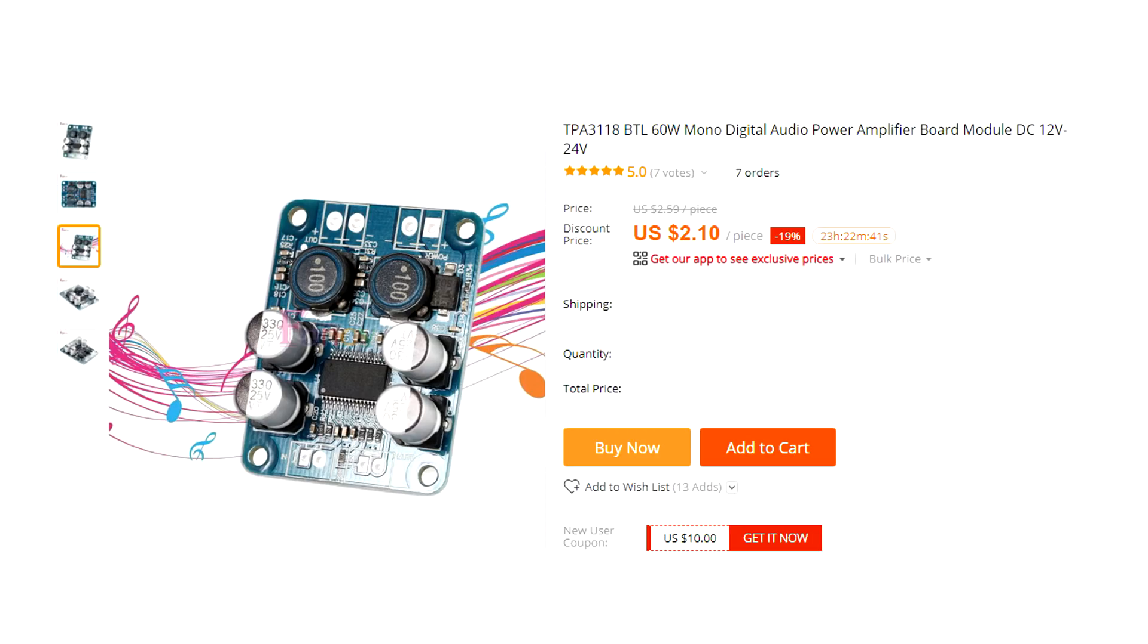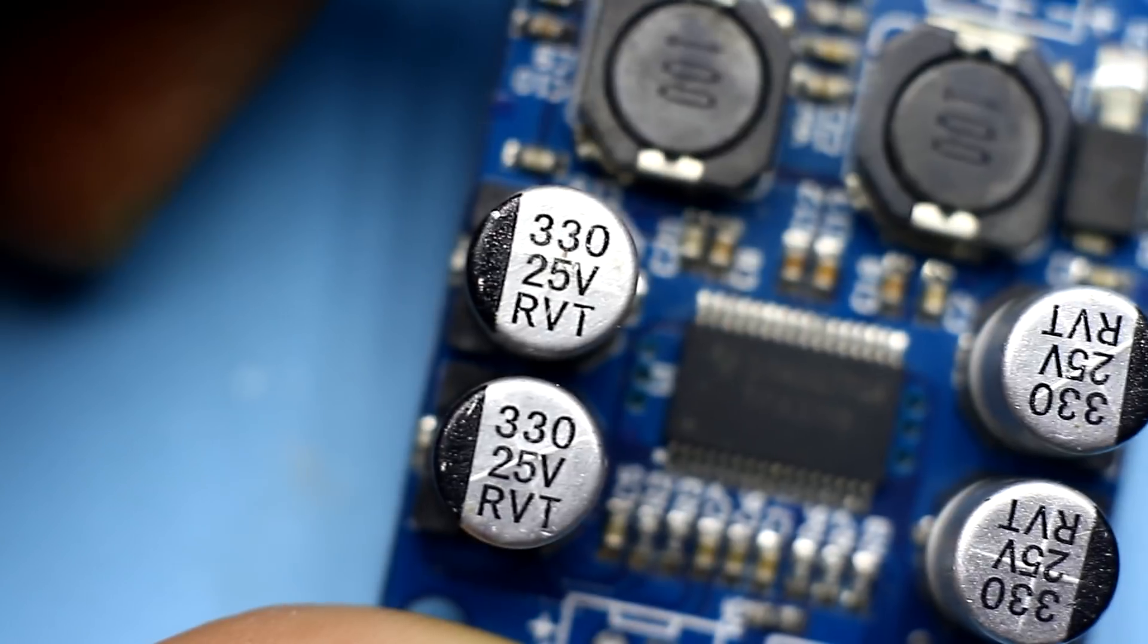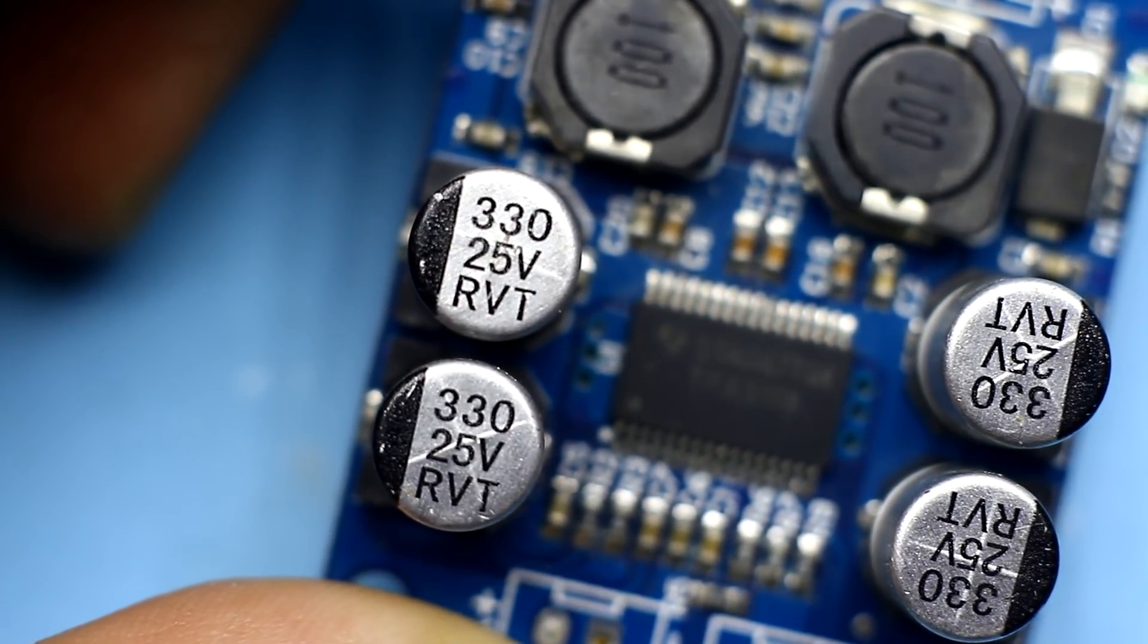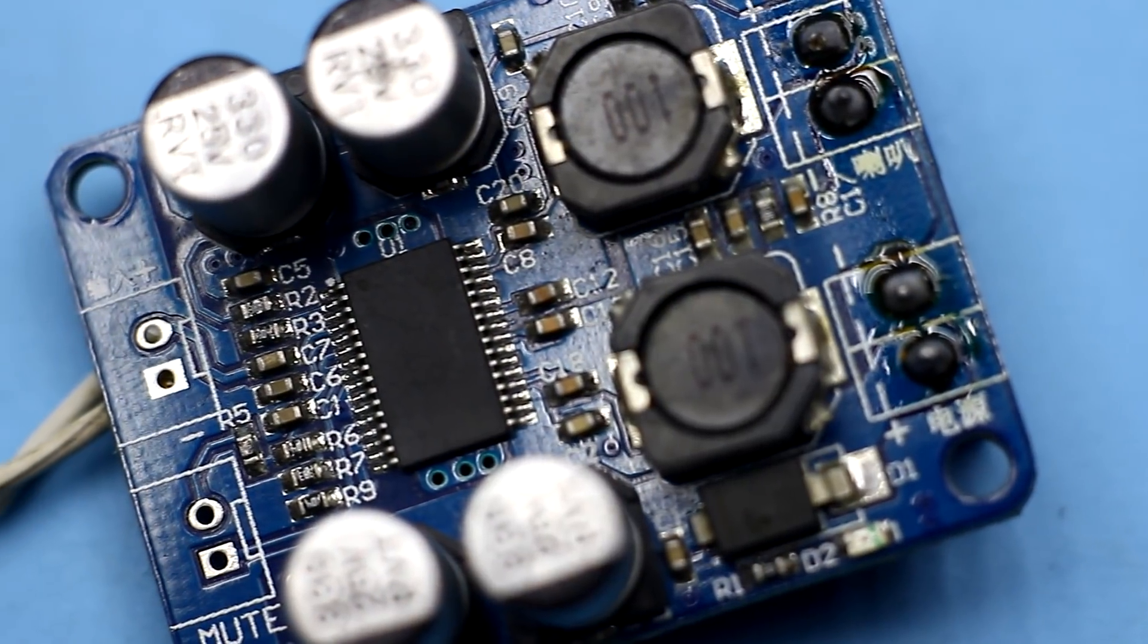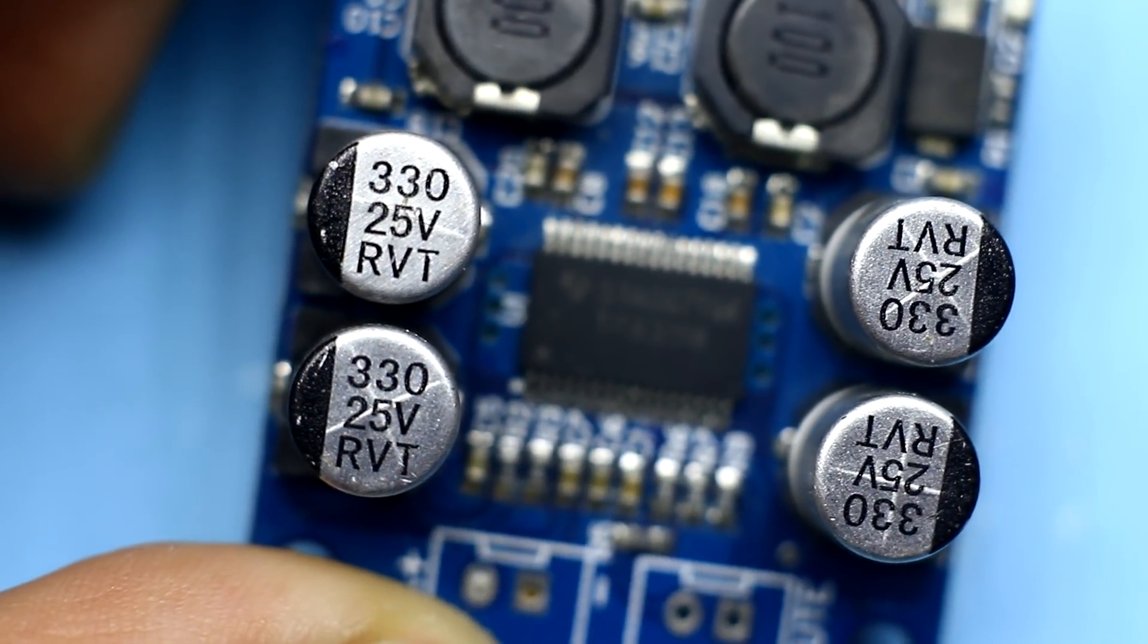The seller indicates that the board could be fed from a source up to 24 volts. But the power capacitors on the board are rated for 25 volts. The reserve is only 1 volt, and this is not good. But today we will torture this amplifier, so we will apply 24 volts.